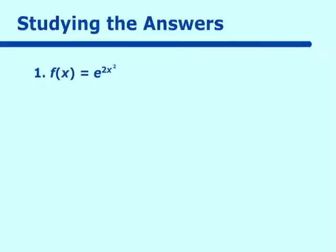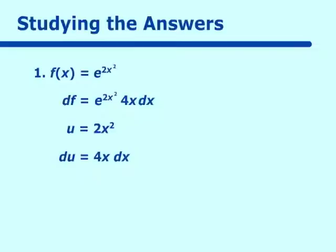The first one: f of x is equal to e to the 2x squared. If we want to find the derivative of that, df is equal to the derivative of e to the 2x squared, which is e to the 2x squared, times the derivative of 2x squared, which is 4x dx. If we make u equal to 2x squared, we find that du is equal to 4x dx. Take note that we have that u du form sitting right in the problem when we do the derivatives.